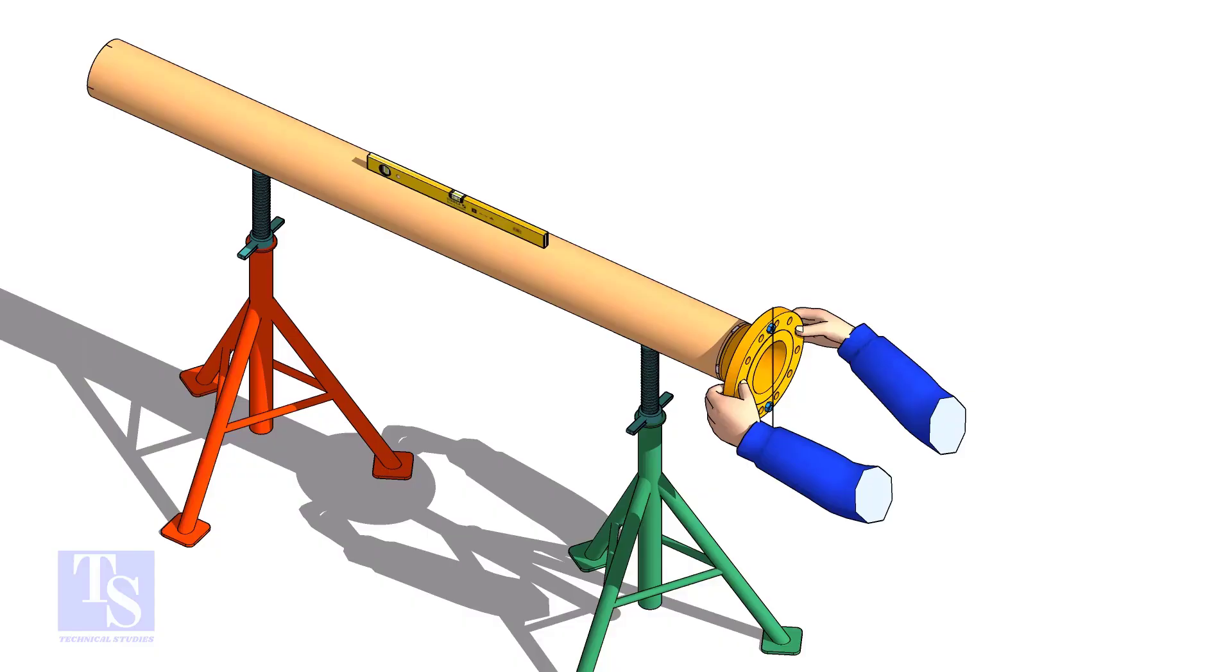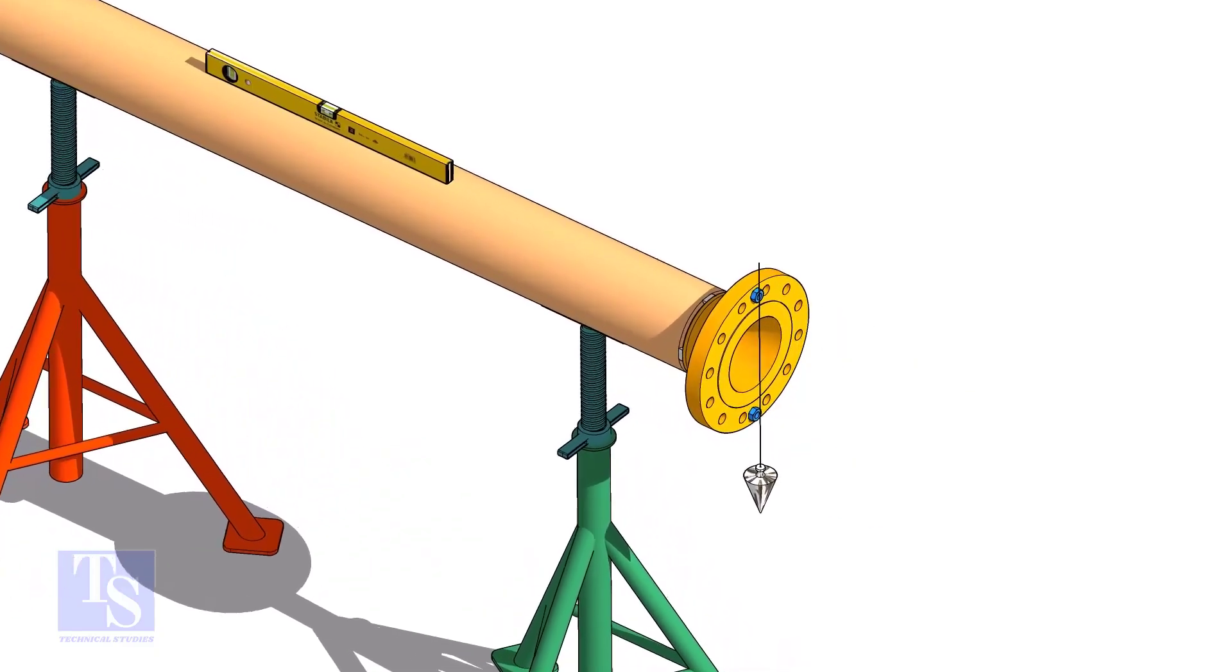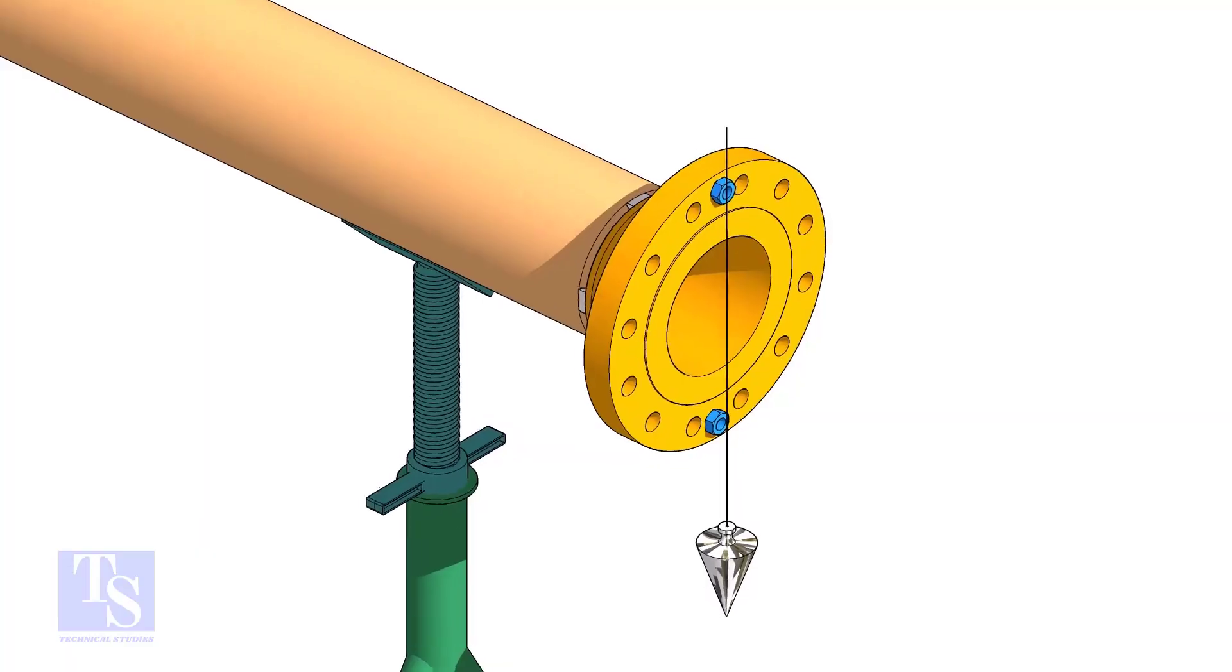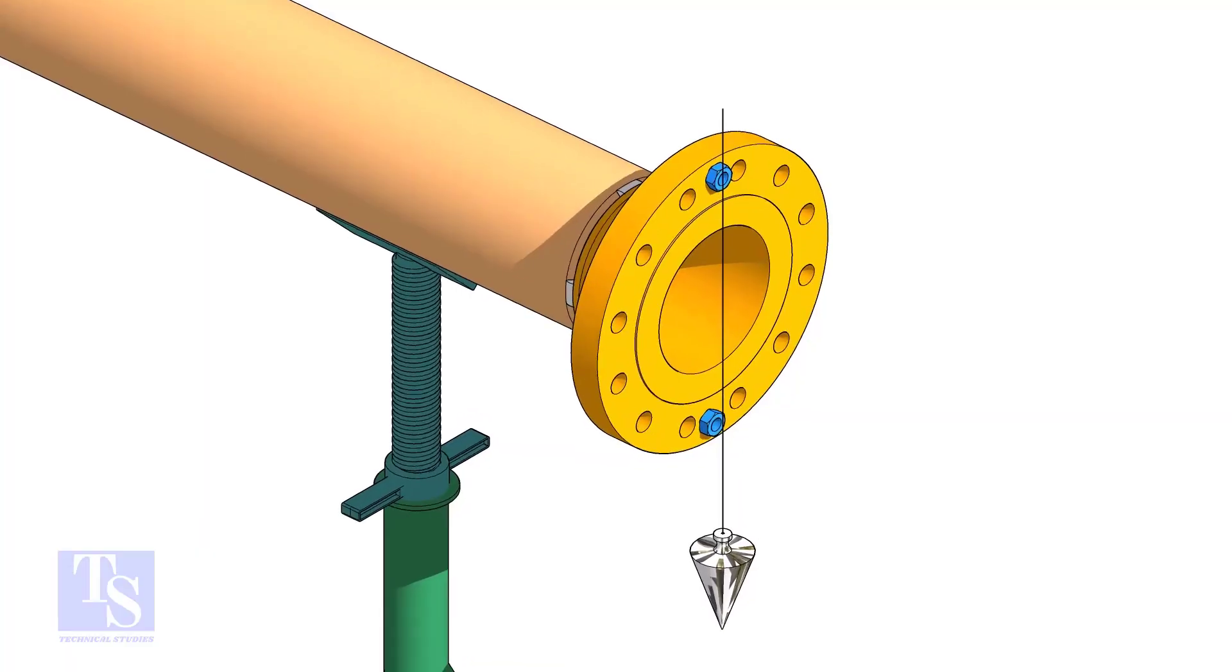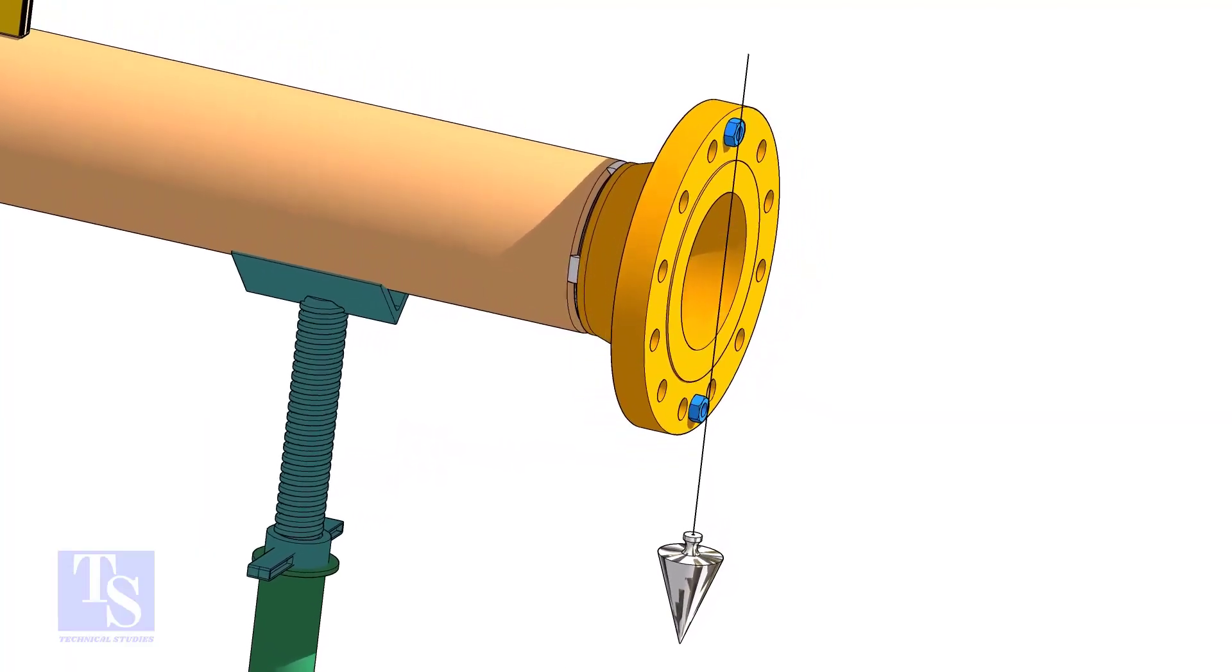In this method, let us learn how to fit up a flange with a pipe, using a plumb. Level the pipe, put a plumb through the center of the flange, on a nut.